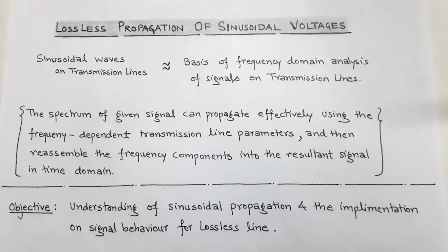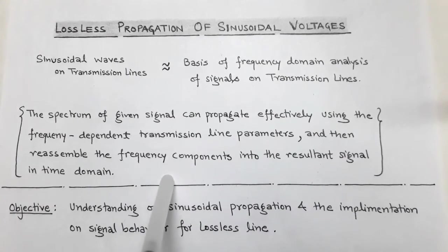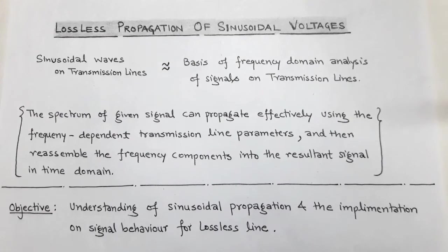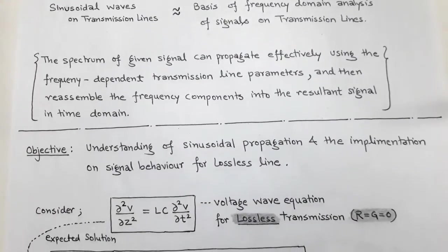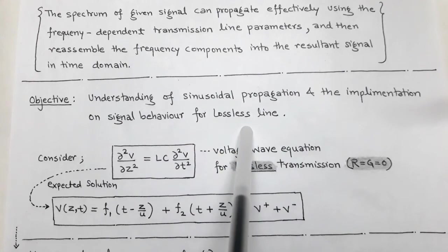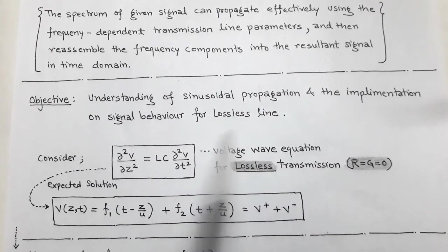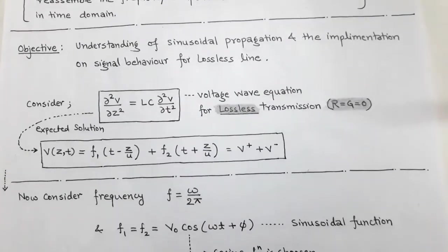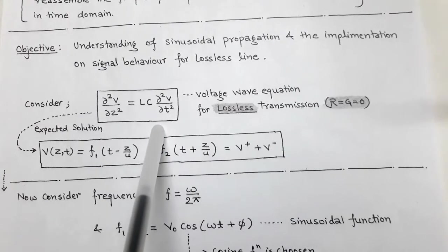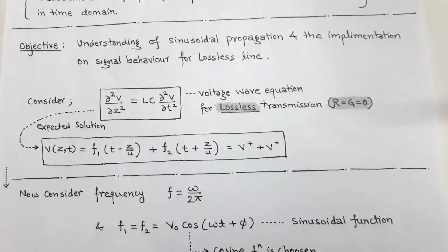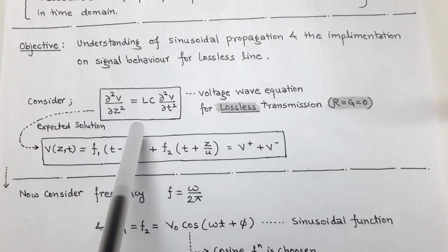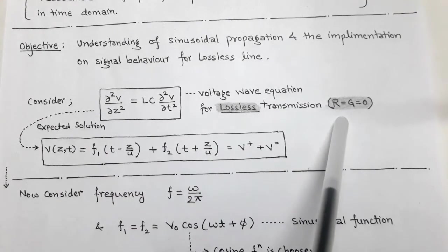We consider frequency-dependent transmission line parameters in the frequency domain and then convert them into the time domain. The objective is understanding sinusoidal propagation and the implementation of signal behaviour for a lossless line. For this we consider the voltage wave equation for lossless transmission: del²V / del Z² = LC · del²V / del T². This is obtained by putting R = G = 0.